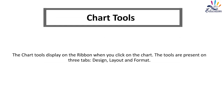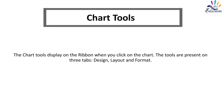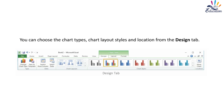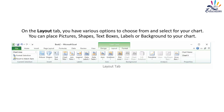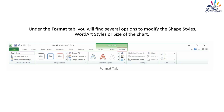Chart Tools: The chart tools display on the ribbon when you click on the chart. The tools are present on three tabs: Design, Layout, and Format. From the Design tab, you can choose chart types, chart layout styles, and location. On the Layout tab, you have various options including placing pictures, shapes, text boxes, labels, or backgrounds to your chart. Under the Format tab, you will find options to modify the shape, styles, word art styles, or size of the chart.